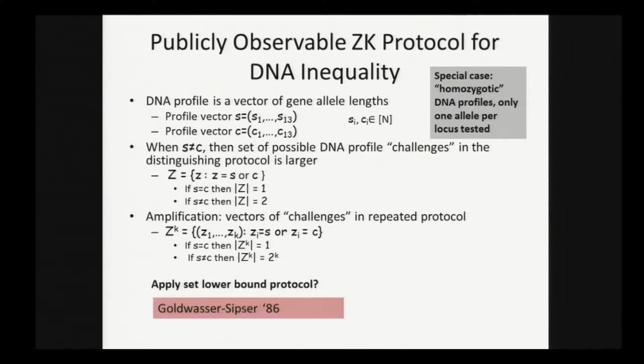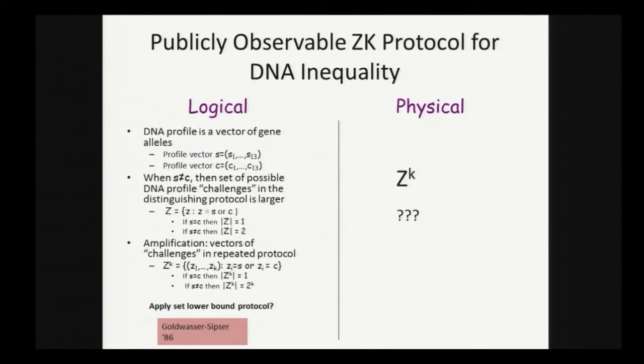If we were all in a logical context, then what we would do is apply a set lower bound protocol to z to the k. The prover would convince the verifier that z to the k is large rather than small. But I've just given you the logical description of z to the k. What does this mean physically? How does the prover do a physical lower bound protocol on this?